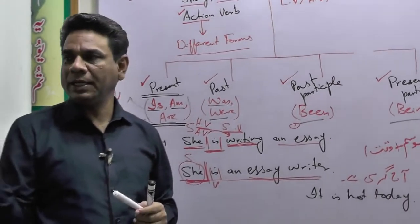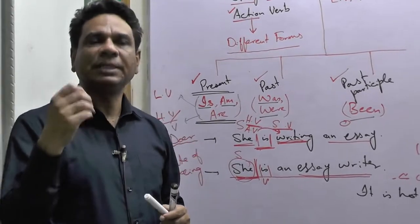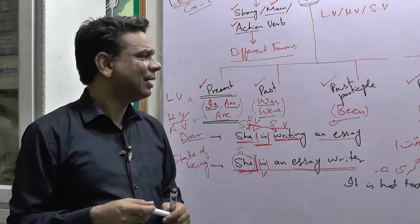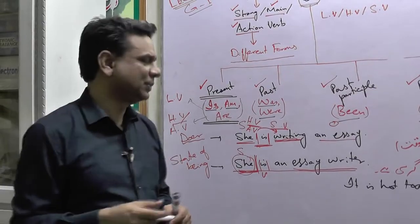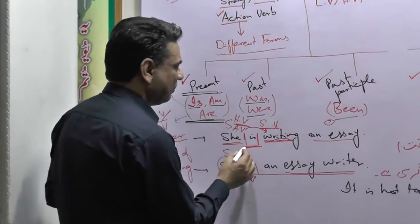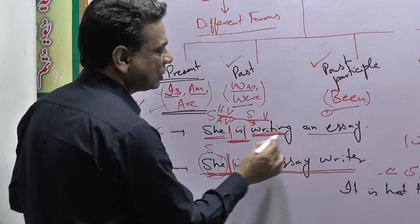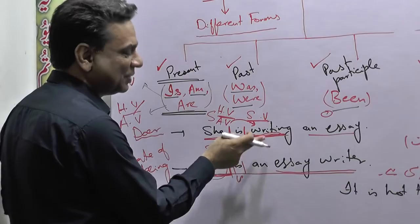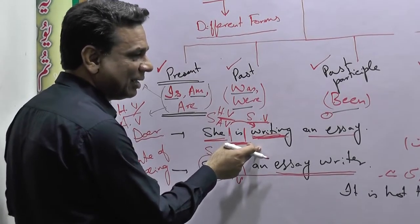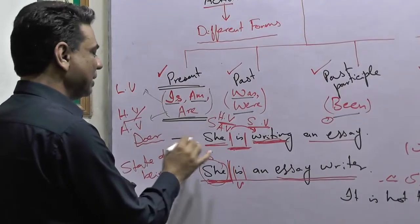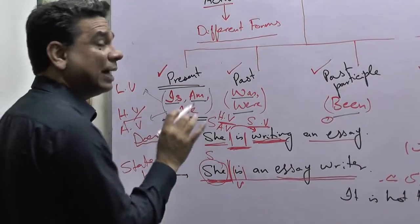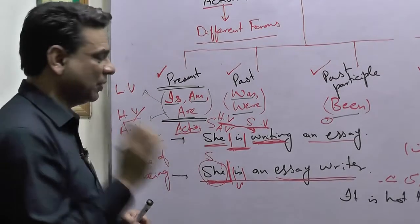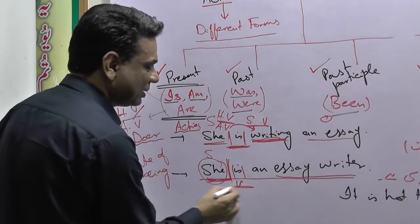Generally our grammar books also write definitions briefly and clearly: 'it describes an action.' Now here 'is' is present. Writing is a strong verb — so what is the verb doing? It is in action, clearly in action. So verb becomes action here. But in the lower sentence where 'is' is present and no strong verb follows — what is 'is' doing here?